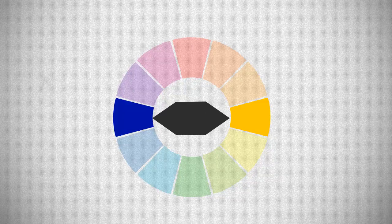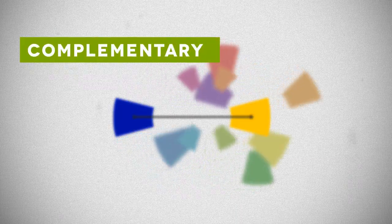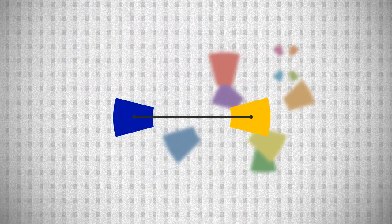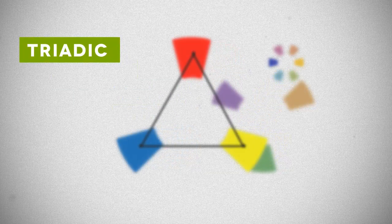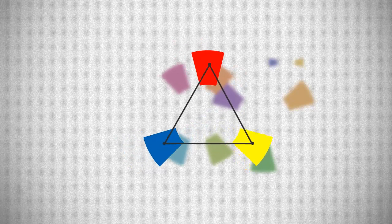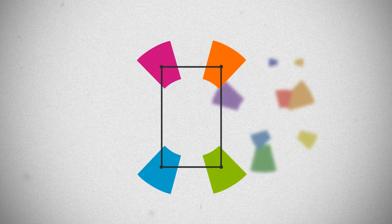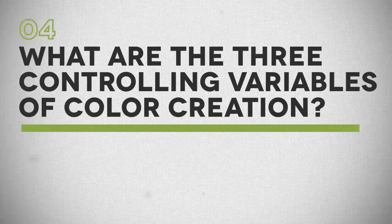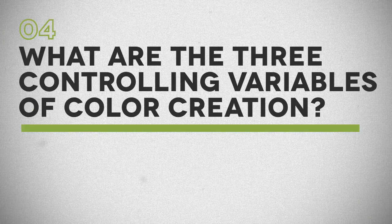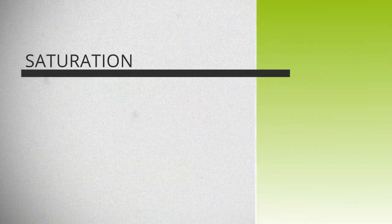These combinations are called color schemes and use any of the following on the color wheel: complementary — two colors opposite from each other; triadic — three colors equally spaced forming a triangle; square — two pairs of colors opposite from each other forming a rectangle.